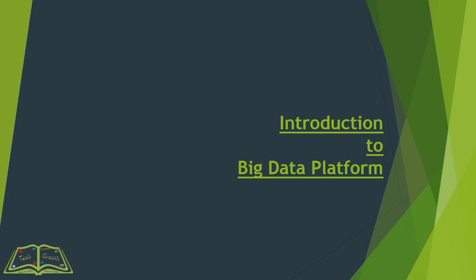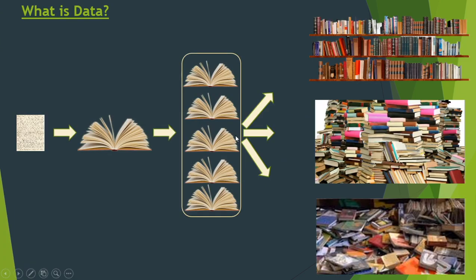First of all we will understand what is data or what is big data. On the left hand side you can see just a single page of any book, which has some information written on it. Those pages — about a thousand pages collected within a book — will have more information compared to that single page.